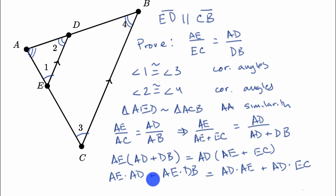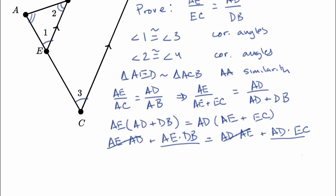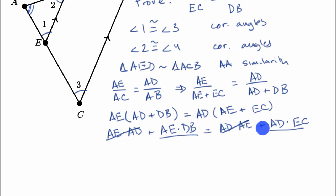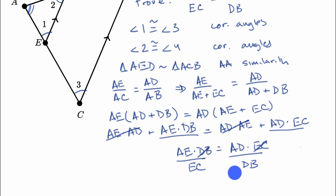Is there anything I can simplify here? I have AE times AD on both sides, so I subtract AE · AD from both sides. That leaves AD · DB equals AD · EC — wait, let me rewrite this cleanly: AE times DB is equal to AD times EC. Now, if you divide both sides by EC, and then divide both sides by DB, the terms cancel.